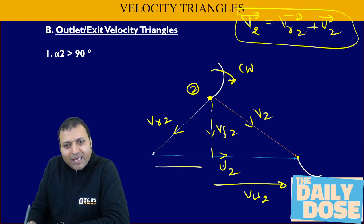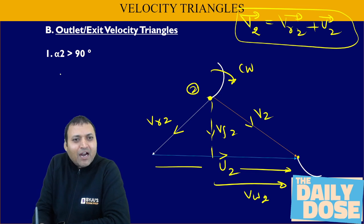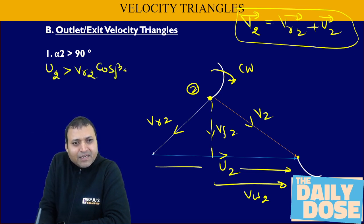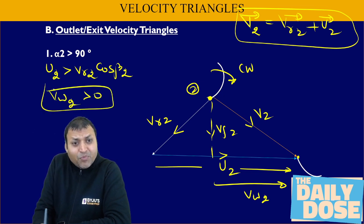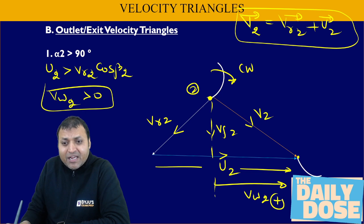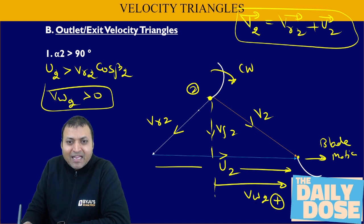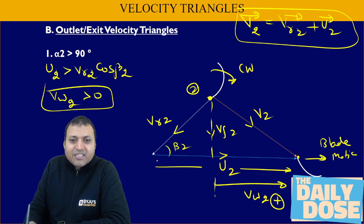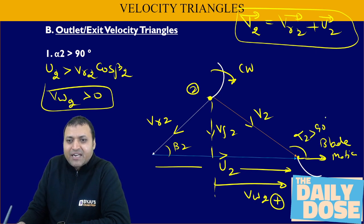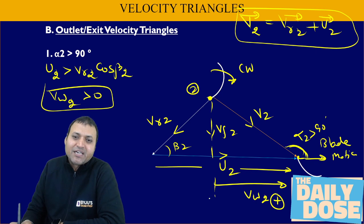For alpha 2 greater than 90°, u2 is greater than vr2·cos(beta 2), or equivalently vw2 is positive. This means the direction of vw2 is in the same direction as the blade motion. The angle inside the triangle is beta 2, and the angle alpha 2 outside is greater than 90°.